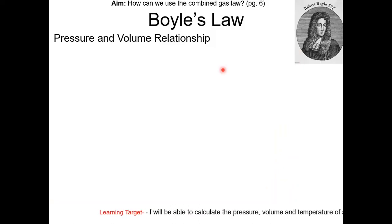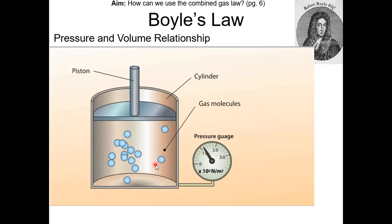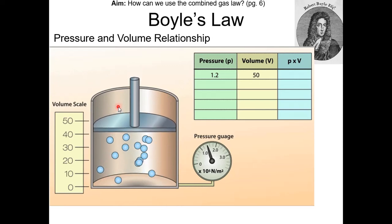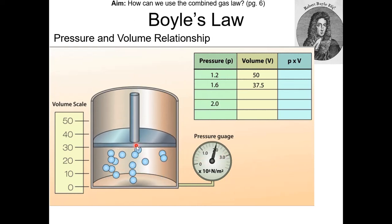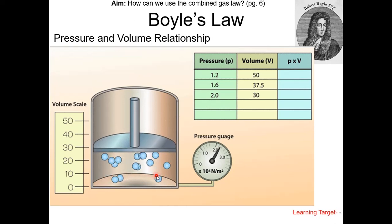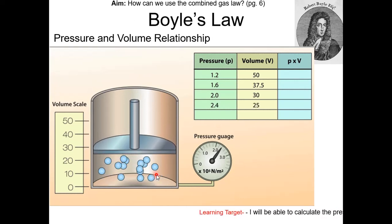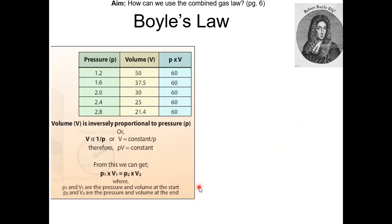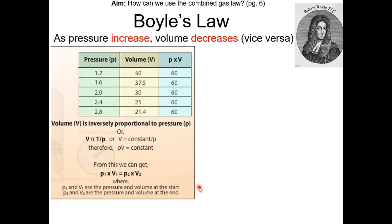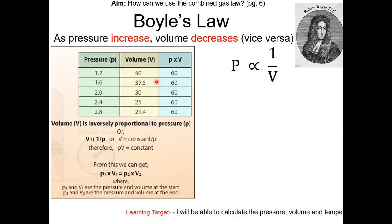Now we'll go over each of the gas laws. The first one is Boyle's law, which deals with the pressure and volume relationship. In this GIF, we have a cylinder with a movable piston. We're applying pressure to the piston by pushing it down, so the pressure is increasing and the volume is decreasing. The molecules are going to hit the walls more often — that's why pressure increases as volume decreases. So pressure is inversely proportional to volume.